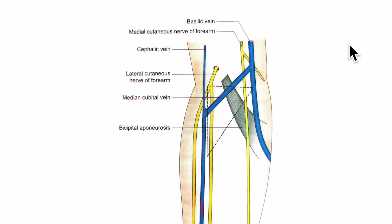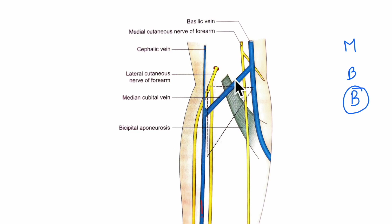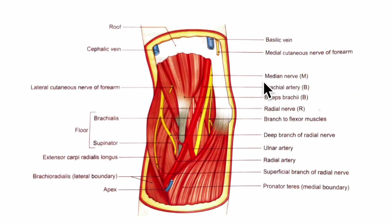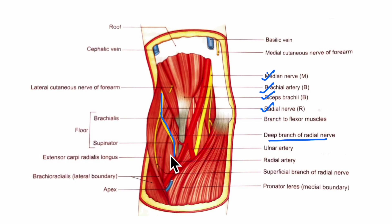The third content is the tendon of the biceps brachii with the bicipital aponeurosis, which can be seen in the cubital fossa. The fourth structure is the radial nerve, which descends medial to the lateral epicondyle to enter the cubital fossa. In the fossa it gives off the posterior interosseous nerve — the deep branch of the radial nerve — which gives branches mainly to the extensor carpi radialis longus and the supinator muscle. It leaves the fossa by piercing the supinator muscle, and the remaining superficial branch runs in the front of the forearm.